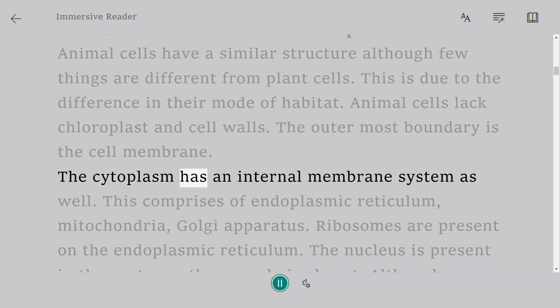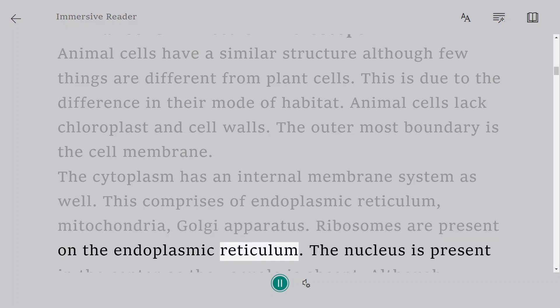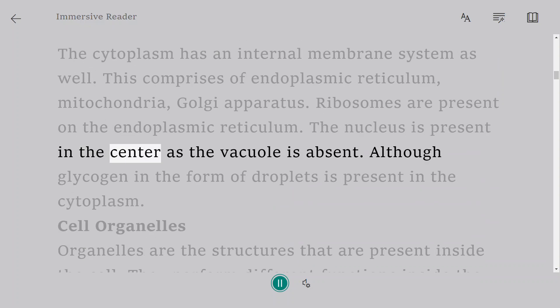The outermost boundary is the cell membrane. The cytoplasm has an internal membrane system as well. This comprises of endoplasmic reticulum, mitochondria, Golgi apparatus. Ribosomes are present on the endoplasmic reticulum. The nucleus is present in the center as the vacuole is absent. Although glycogen in the form of droplets is present in the cytoplasm.